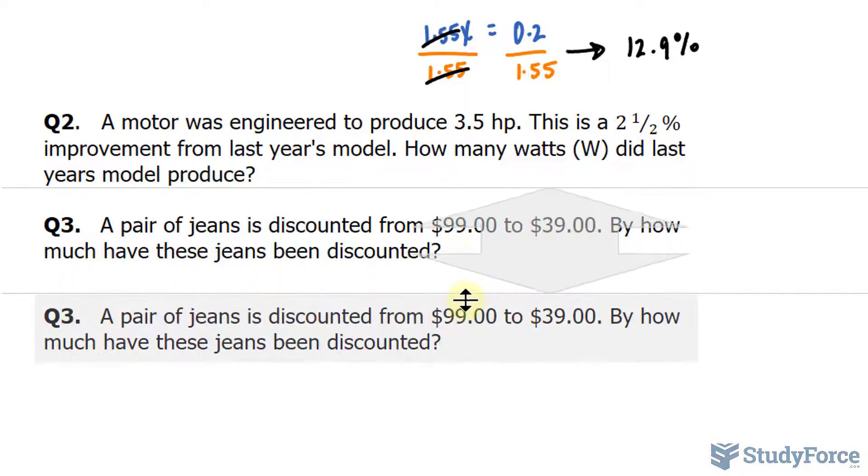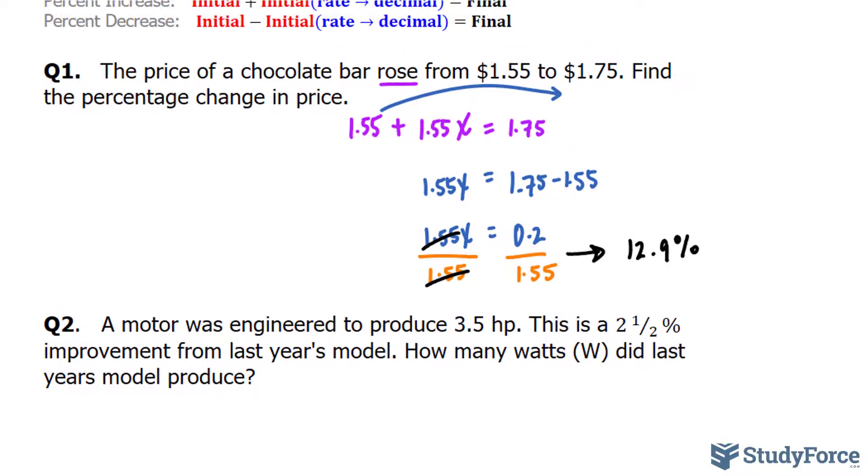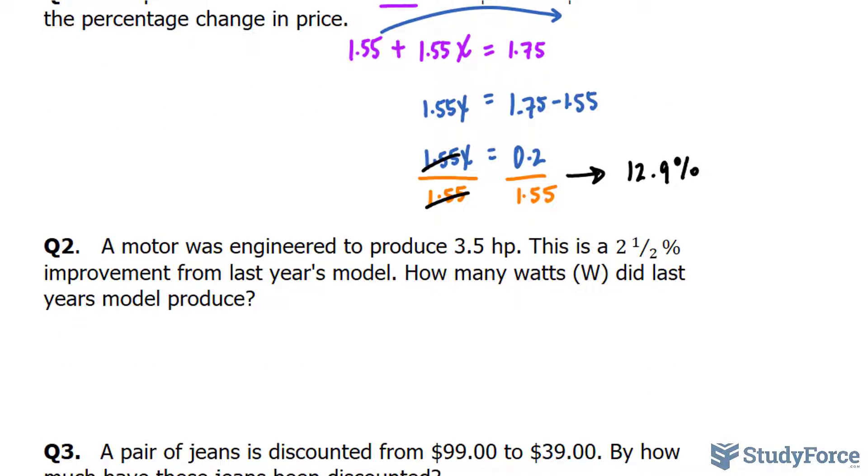So, this question involves two things. The first one being finding out what last year's model was in horsepower, and then converting that over to watts. We'll begin by finding last year's amount in horsepower. Since there was an improvement, we can assume that there is a percentage increase.